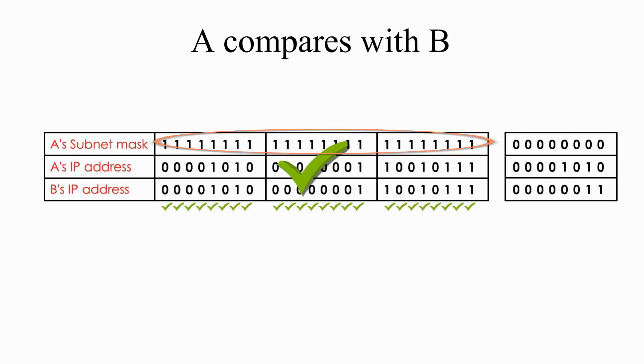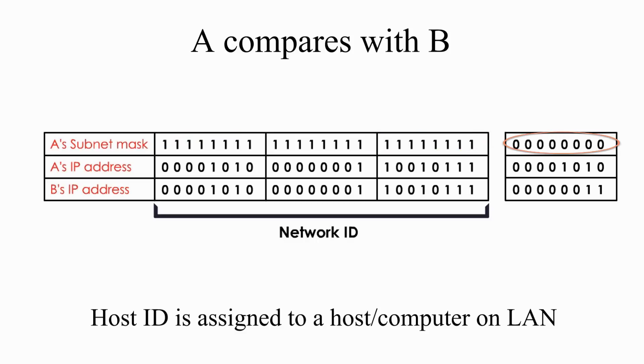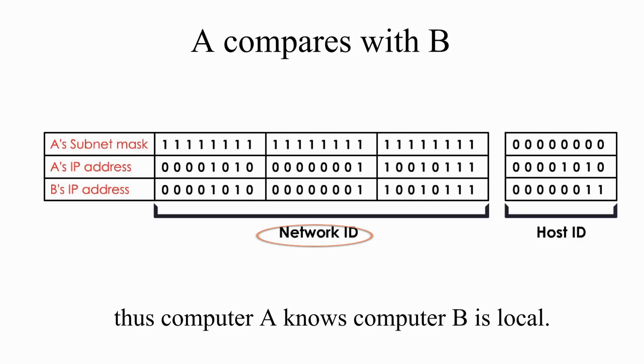And I think computer A has a strong reason to believe computer B is local. Why? Because the first part under the 1's of subnet mask is network ID part, a unique identifier for local area network. The second part on the 0's of subnet mask is host ID part, an ID assigned to a different host on a local area network. Since both computer A and B share the same network ID. Thus, computer A knows computer B is local.